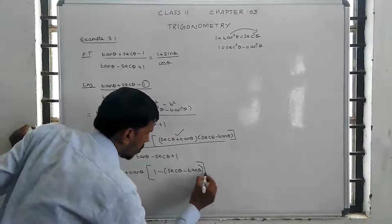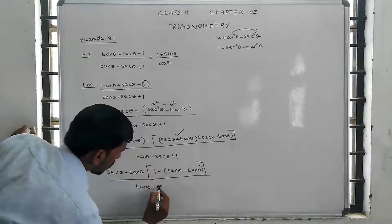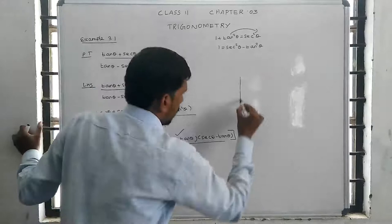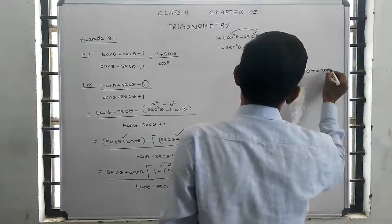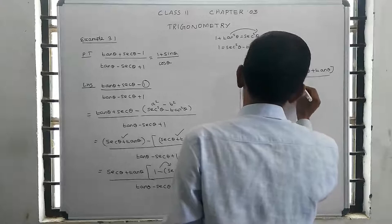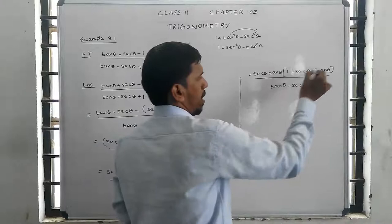So this gives secant theta minus tan theta in brackets, whole thing divided by the denominator: tan theta minus secant theta plus 1. We can factor it out — secant theta plus tan theta into 1 minus secant theta plus tan theta — whole thing divided by the denominator tan theta minus secant theta plus 1.